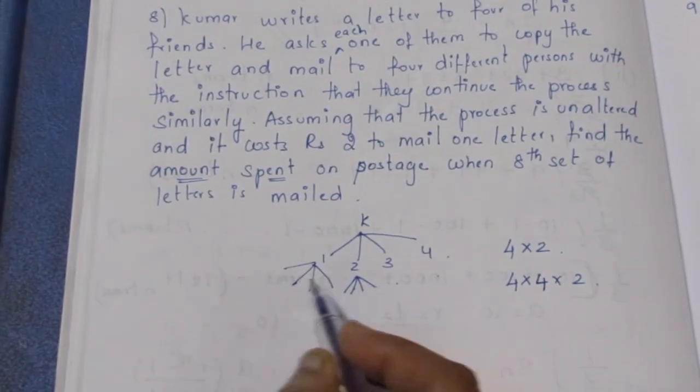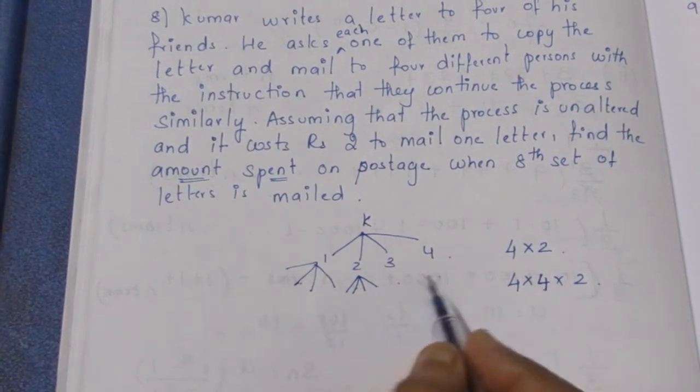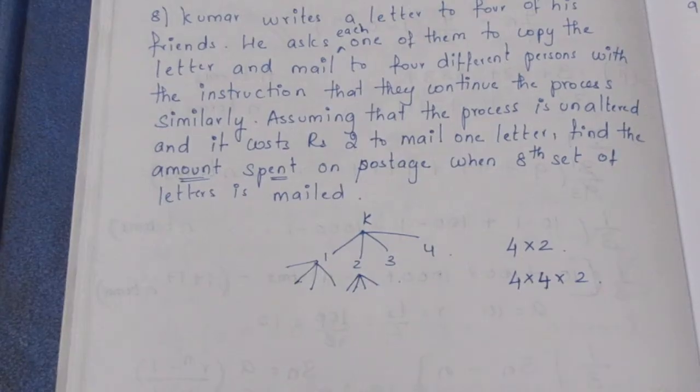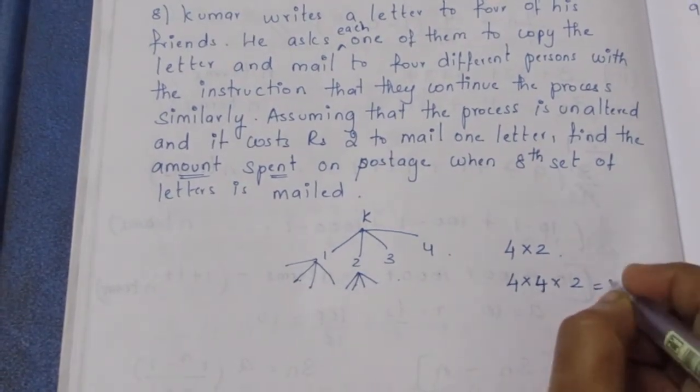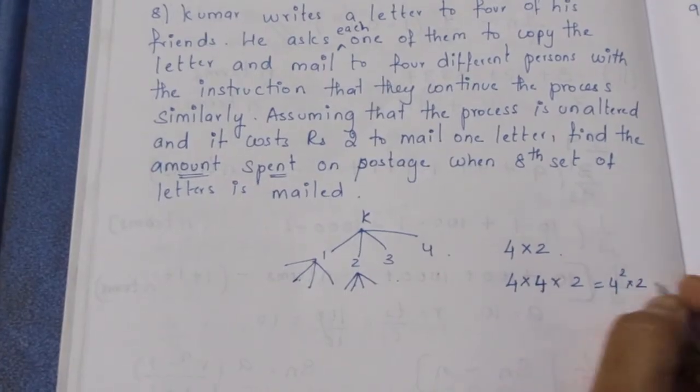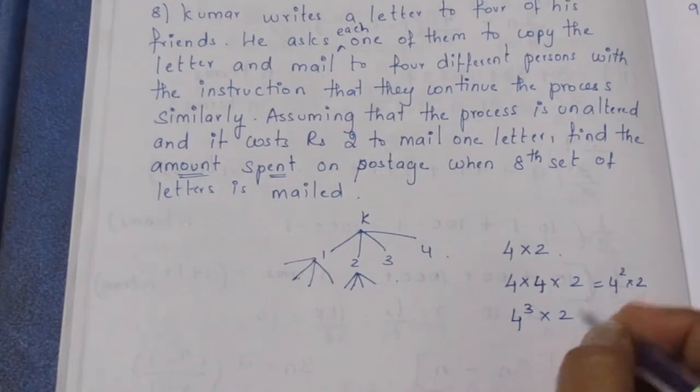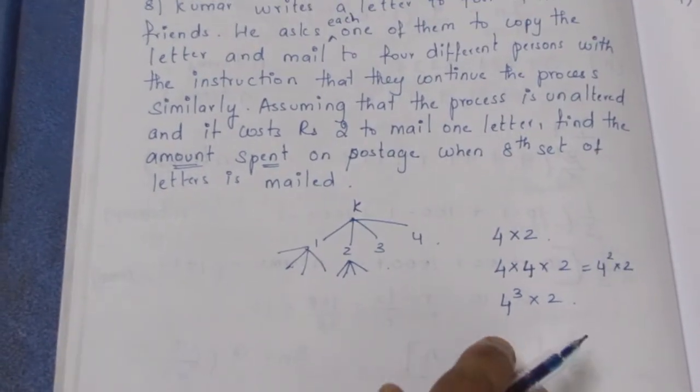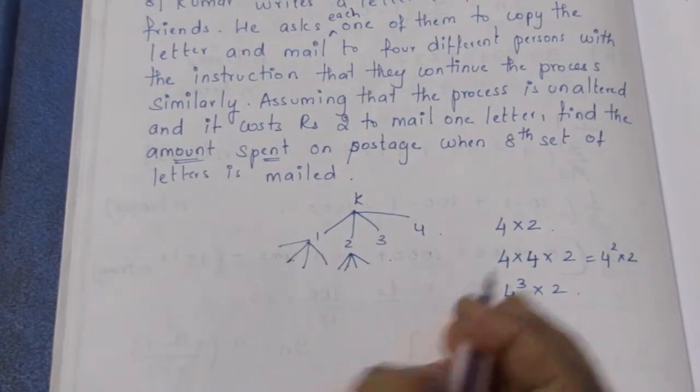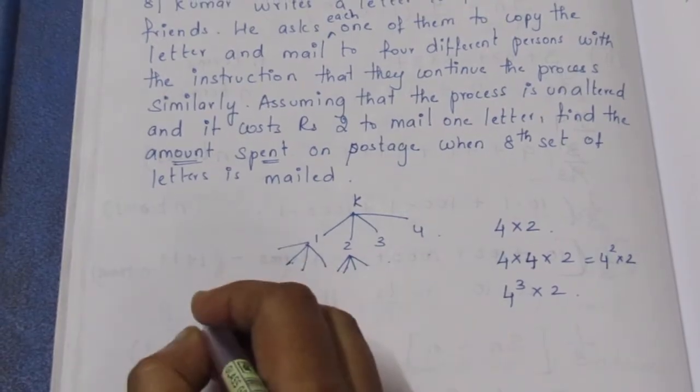So 2nd set is 4 square into 2, 3rd is 4 cube into 2, 4th set is 4 power 4 into 2. So now we'll take 8th set. What we do is put it in the GP. Let's put in the GP.